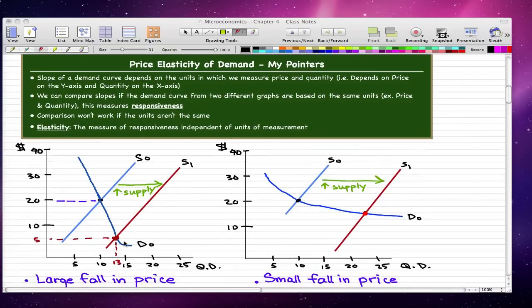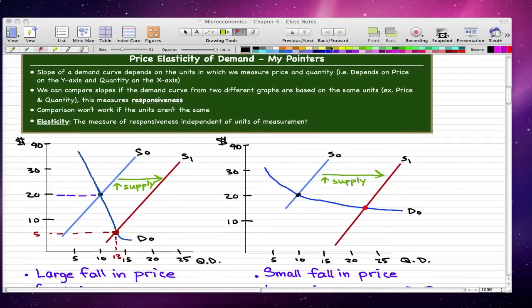If we have two different graphs like I have here, we can compare the slopes of this original demand curve and this original demand curve if they are based on the same units. You can see that for both graphs, the horizontal is quantity demanded and the vertical is price. Due to the units being the same, we can compare the slopes. But comparison won't work if the units aren't the same. Elasticity is a measure of responsiveness independent of units of measurement.